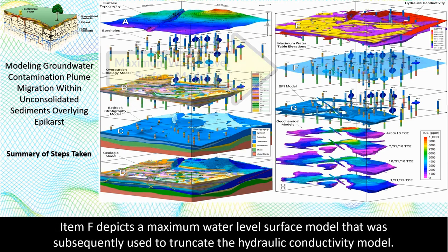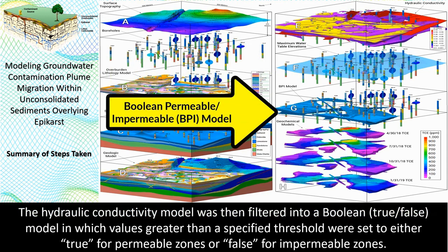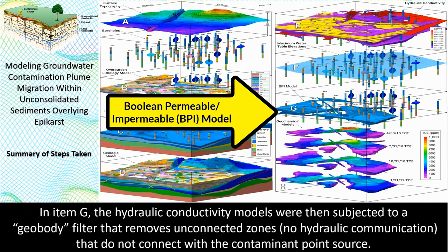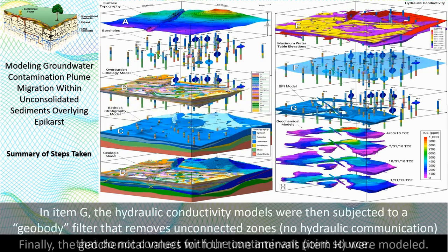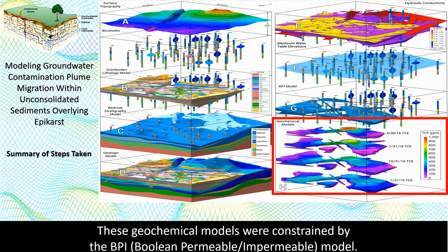Item F depicts a maximum water-level surface model that was subsequently used to truncate the hydraulic conductivity model. The hydraulic conductivity model was then filtered into a Boolean or true-false model in which values greater than a specified threshold were set to either true for permeable zones or false for impermeable zones. In item G, the hydraulic conductivity models were then subjected to a geobody filter that removes unconnected zones with no hydraulic communication that do not connect with the contaminant point source. Finally, the geochemical values for four time intervals, item H, were modeled. These geochemical models were constrained by the BPI or Boolean permeable-impermeable model.